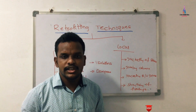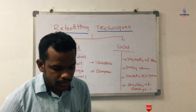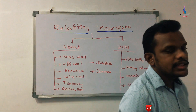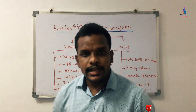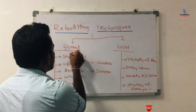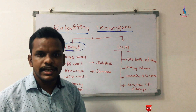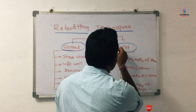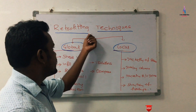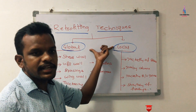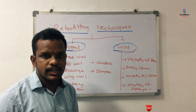To decrease the deflection value, shear value, bending value, and torsion value, we have to follow earthquake-resistant structure design concepts. These concepts are generally called retrofication techniques. Retrofication is divided into two categories: global retrofication technique and local retrofication technique.